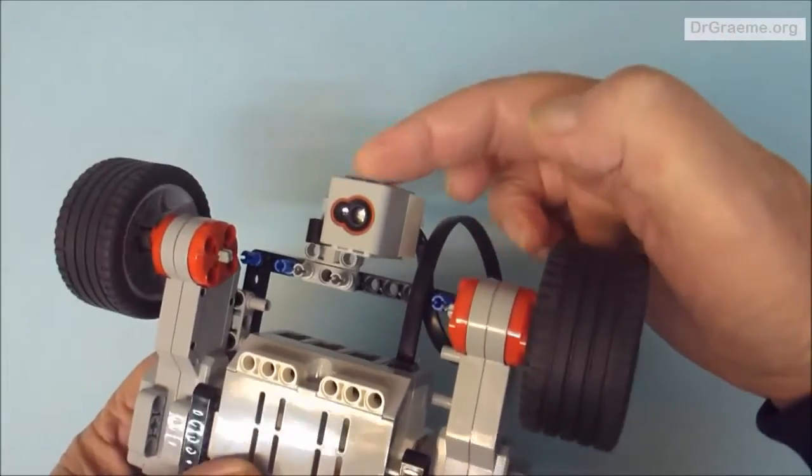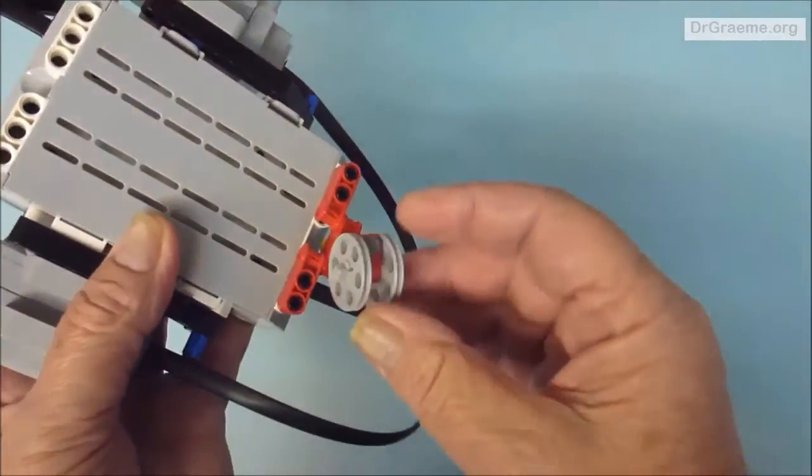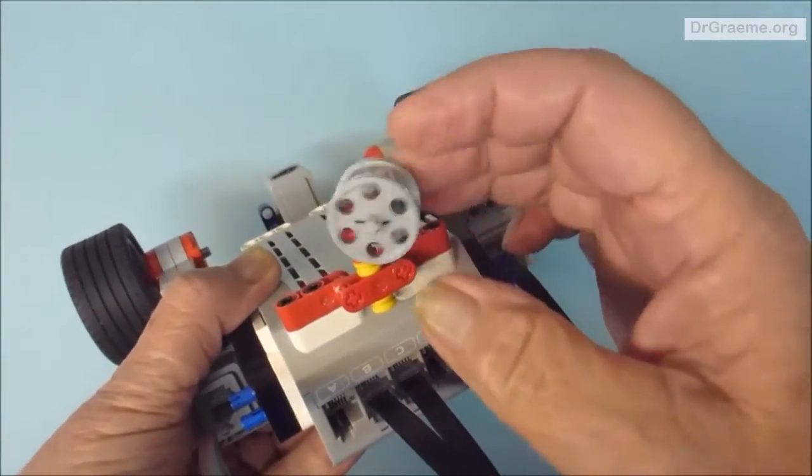Both have this color sensor, but the home set has this particular rear wheel, a spinning rear wheel mounted like this.